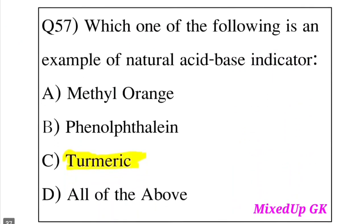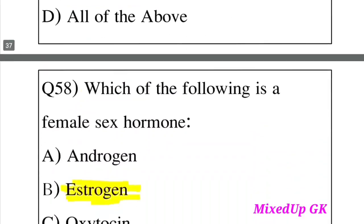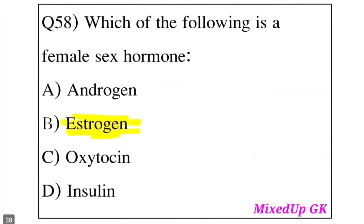Question 57: Which one of the following is an example of a natural acid-base indicator? Option A: Methyl orange. Option B: Phenolphthalein. Option C: Turmeric. Option D: All of the above. The answer is Option C, Turmeric. Turmeric is an example of a natural acid-base indicator.